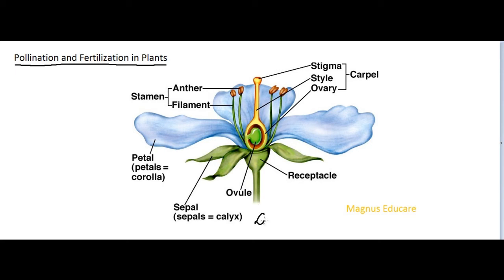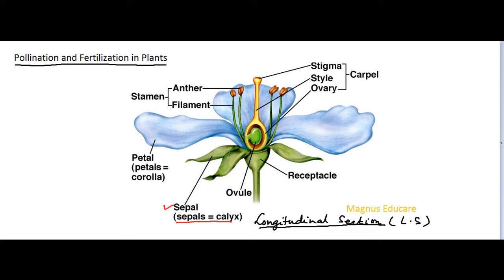This is the longitudinal section of a flower, in short known as LS of a flower. Here we are finding that this is the receptacle — the base on which the flower is resting. And this is known as the sepal, also known as calyx.